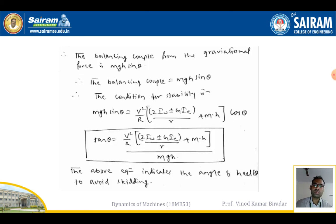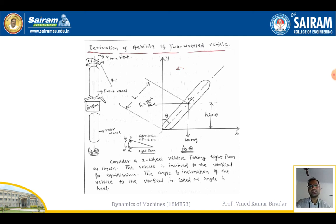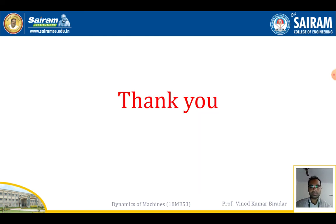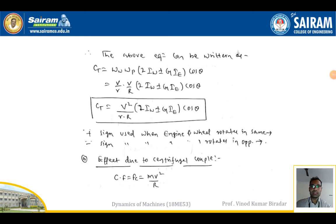This completes the derivation of the stability of a two-wheel vehicle. To summarize: when the vehicle is turning, two couples act on it - the effect due to the gyroscope couple and the effect due to the centrifugal couple. By combining both cases, we get the final equation for stability, which gives the angle of heel to avoid skidding: tanθ = (v²/R)·[(2·Iw ± G·Ie)/r + m·h] / (m·g·h). Remember this formula for solving problems. Thank you.